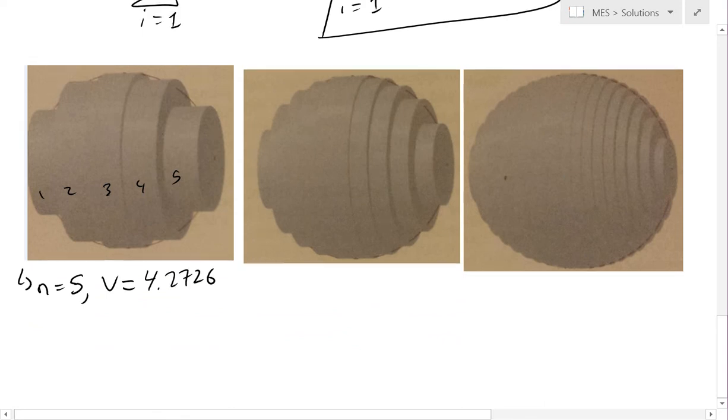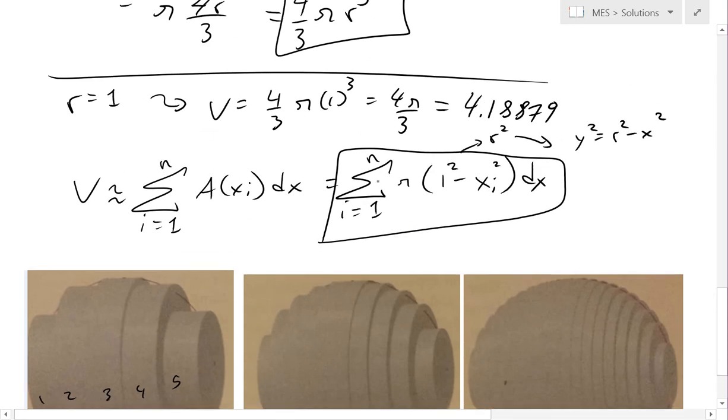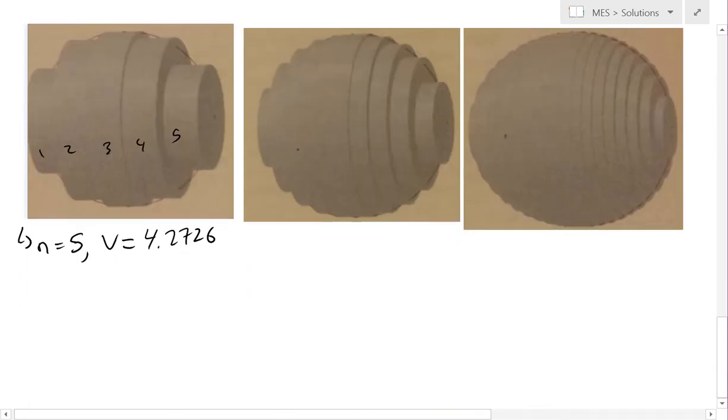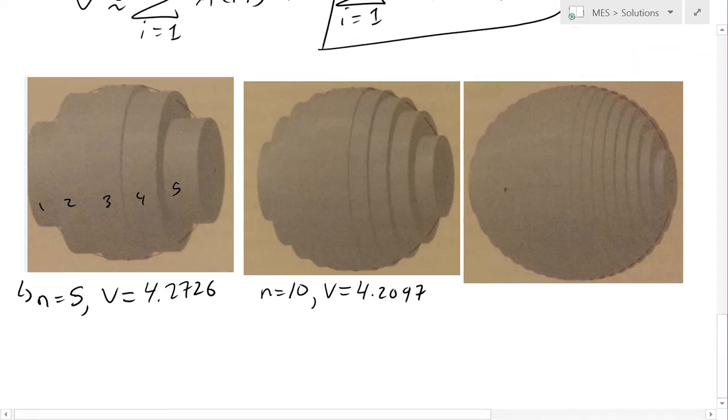Now the volume would actually be equal to 4.2726 if you were to calculate this, basically sum this up using n up to 5 right here. And now in this case there's actually 10, so n equals to 10, or 10 disks. To solve this, the summations, you're going to get a volume of 4.2097.